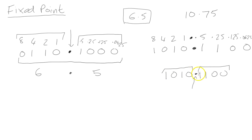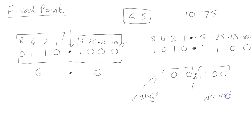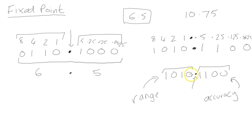Something to pay attention to here: by determining where we want the fixed point, we have to consider how much range of a number we want. The range is determined by the left side of the fixed point, and we also need to determine accuracy, which is the right side of the fixed point. The more bits we have on the right-hand side, the more accurate we can make our number — but that comes at a cost of the range. The more bits we have on the left side, the larger the range, but it comes at a cost of the accuracy.